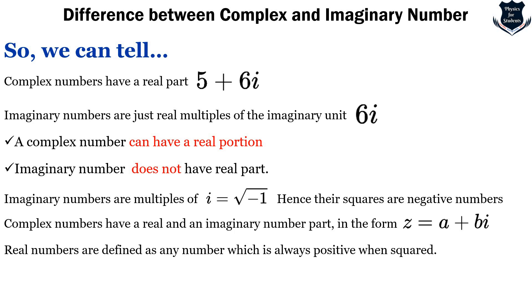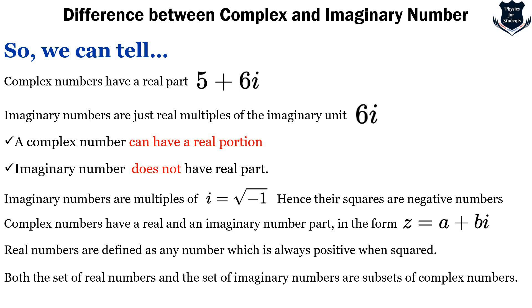Real numbers are defined as any number which is always positive when squared. Both the set of real numbers and the set of imaginary numbers are subsets of complex numbers.